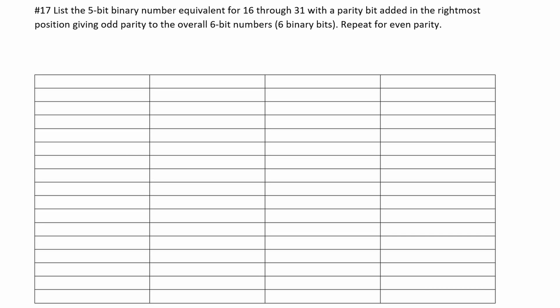We need to list the five-bit binary number equivalents for 16 through 31 with a parity bit added in the rightmost position, on the far side of our binary, giving odd parity to the overall six-bit numbers. Then we're going to repeat for even parity. I have this chart right here — we're going to write the decimal, then the binary, odd, and then the even forms.